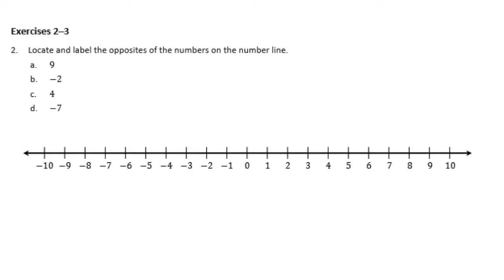Number 2: Locate and label the opposites of the numbers on the number line. First, A — we're looking for the opposite of 9. So 9 is right here. We want to find the opposite of 9. If 9 is 9 units to the right of 0, the opposite would be negative 9.